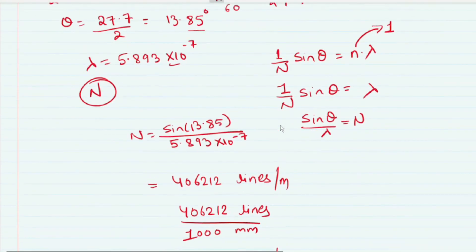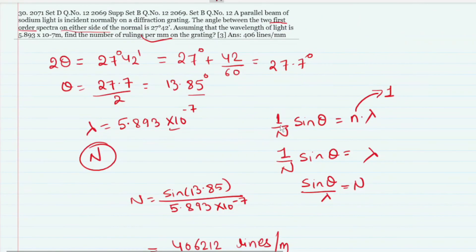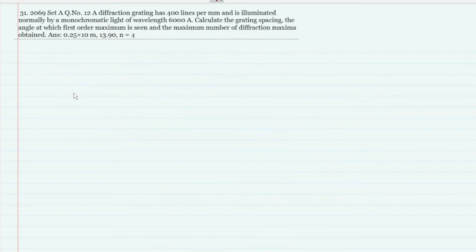This is the formula for this type of problem. You can see the details. In the next question, our diffraction grating has 400 lines per mm.